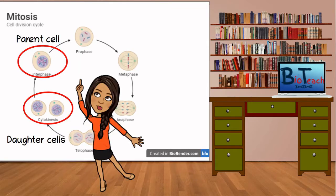Let's look at this image. This is the mitotic cycle, and highlighted in the red circle are the parent cells and the daughter cells. Note how we start off with one parent cell and end up with two daughter cells. Note also how they look exactly the same in the diagram.